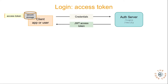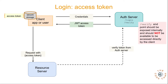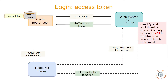In the next step, the client makes a request to the resource server along with the access token, and this token is sent in the authorization header. The resource server asks the auth server to verify the token and confirm the client's identity. Upon receiving a successful verified response, the resource server sends the resource back to the client, and any additional information from the token can also be retrieved.